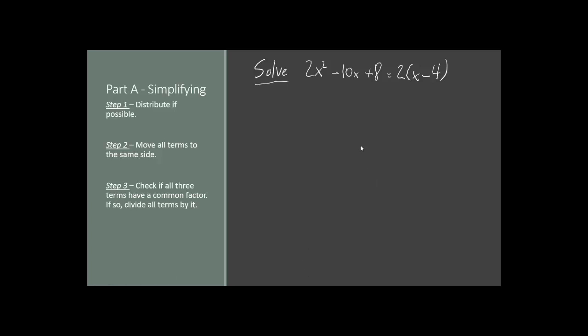The question we have today is: 2x-squared minus 10x plus 8 equals 2 times the quantity x minus 4.